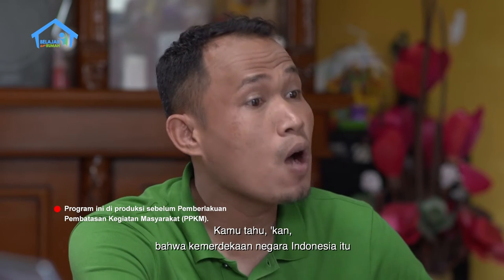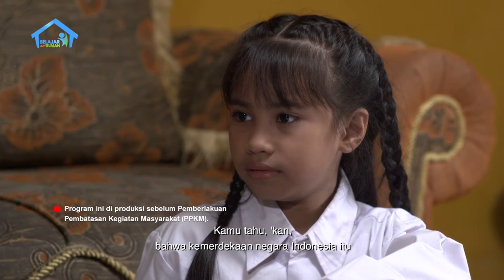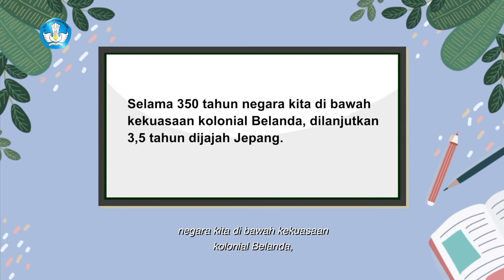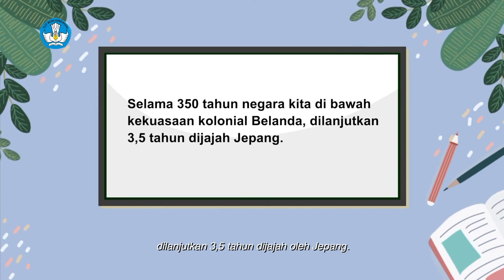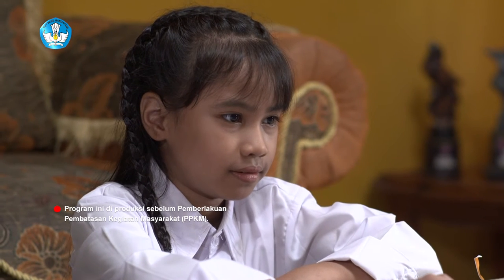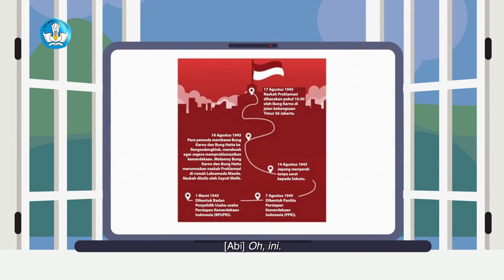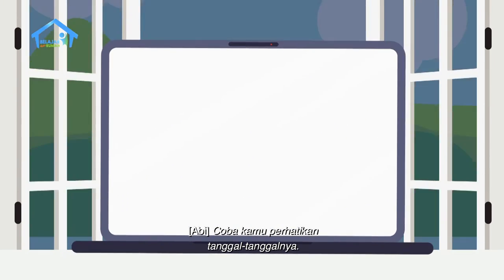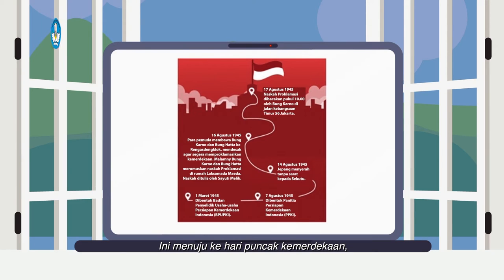Sekarang tinggal satu tugas lagi. Indah diminta untuk menceritakan perjuangan bangsa Indonesia. Kamu tahu kan bahwa kemerdekaan negara Indonesia itu melalui perjuangan yang panjang dan berat. Selama 350 tahun, negara kita di bawah kekuasaan kolonial Belanda, dilanjutkan 3,5 tahun dijajah oleh Jepang. Ini adalah peristiwa yang terjadi sebelum pembacaan teks proklamasi. Coba kamu perhatikan tanggal-tanggalnya, ini menuju ke hari puncak kemerdekaan, yaitu tanggal 17 Agustus 1945.